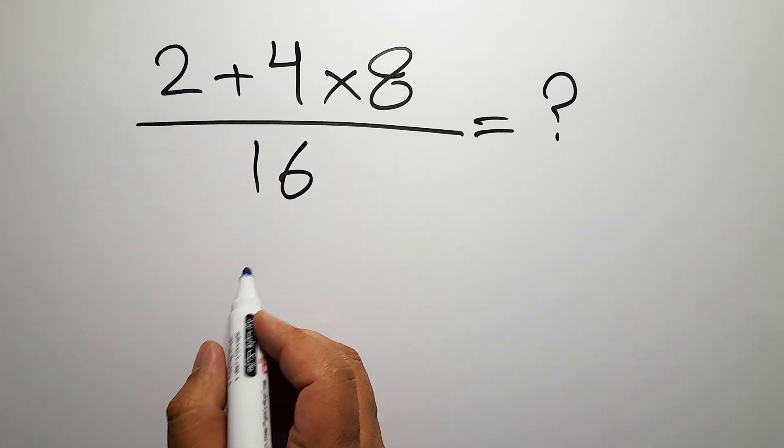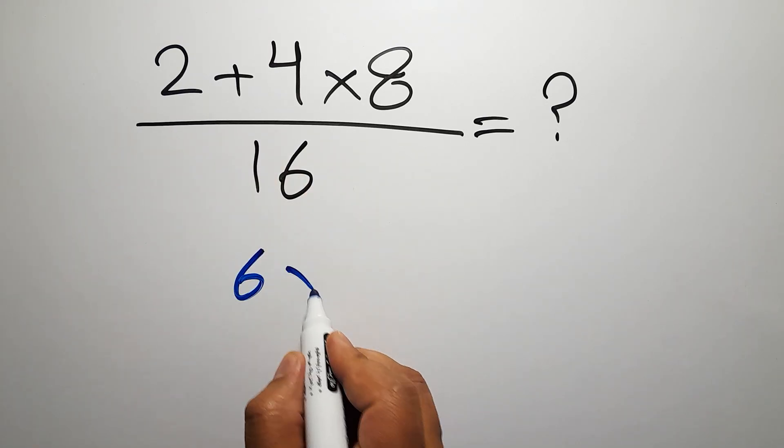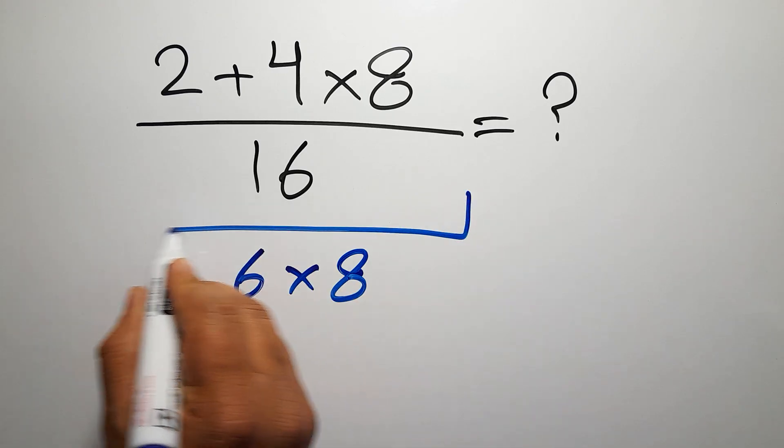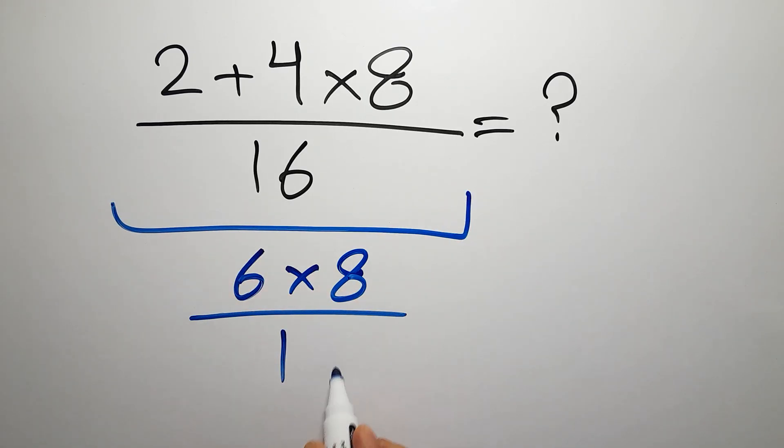2 plus 4 gives us 6, so 6 times 8 over 16.